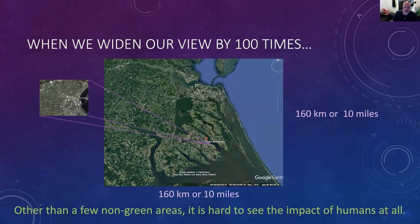If we jump up another factor of 100, we're now looking at what you'd call the tidewater region. Other than the non-green areas, it's not really obvious that humans have done anything to this landscape. You can see roughly where the previous photo came from. This would be Virginia Beach over here, and down here somewhere would be roughly the border between North Carolina and South Carolina. The big green spot is the Great Dismal Swamp. Over here is the eastern shore of Virginia, and they're actually showing the Chesapeake Bay Bridge Tunnel. We're now at basically 160 kilometers.